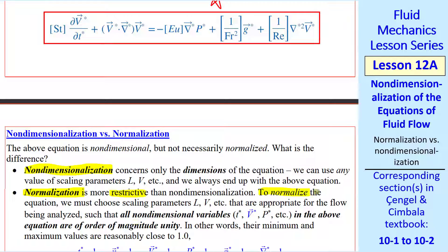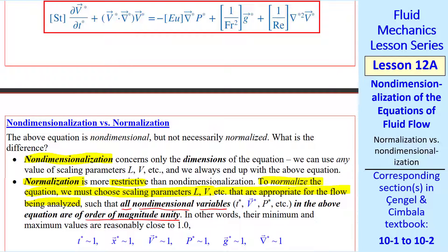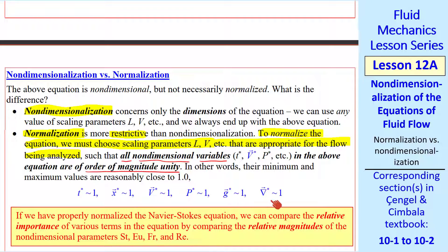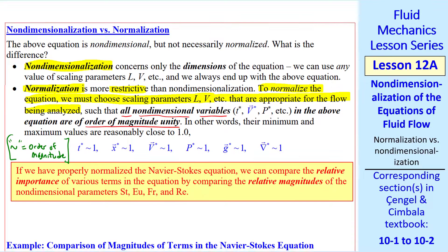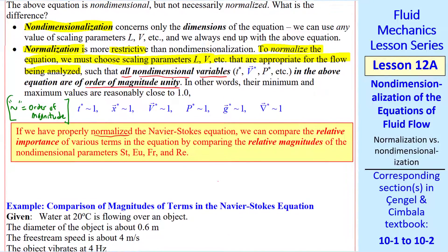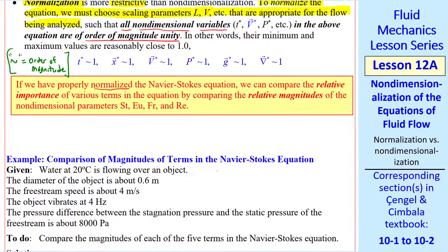Normalization is much more restrictive. To normalize the equation, we choose scaling parameters — like L, V, etc. — that are appropriate for the flow being analyzed, so that all non-dimensional variables are order of magnitude unity. In other words, their minimum and maximum values are reasonably close to 1, as shown for all the starred variables. We use a tilde to represent order of magnitude — tilde is not the same as an equal sign. We compare numbers like 10⁻³ to 100, which differ by five orders of magnitude. If we've properly normalized the Navier-Stokes equation, we can compare the relative importance of terms by comparing the magnitudes of the non-dimensional parameters.